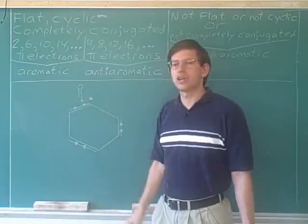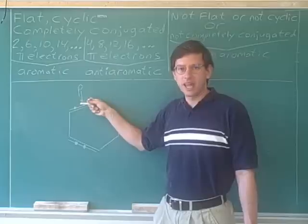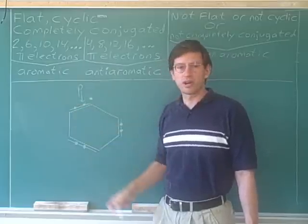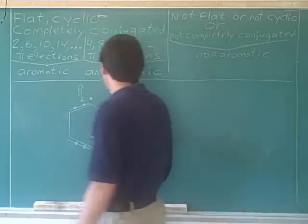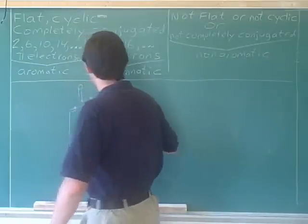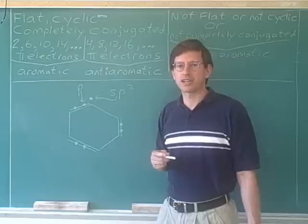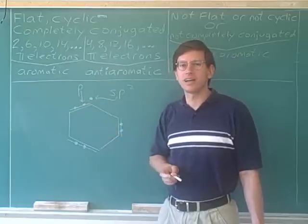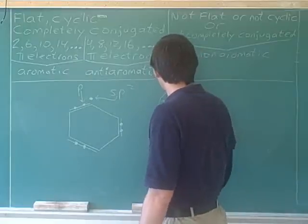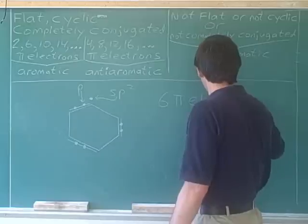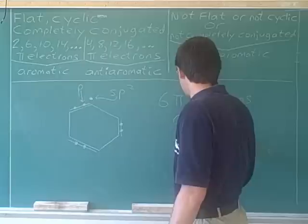We'll label this electron with a 'p' to show that it's in a p orbital. Therefore, the unpaired electron cannot be in a p orbital because the p orbital has already been used up. This carbon must be using one of its sp2 orbitals for the unpaired electron. Therefore, the unpaired electron is not a pi electron. So how many pi electrons are there total? Six — an even number.